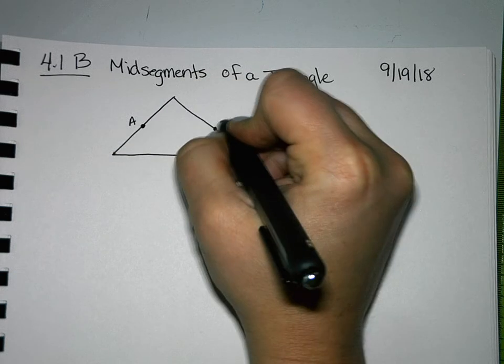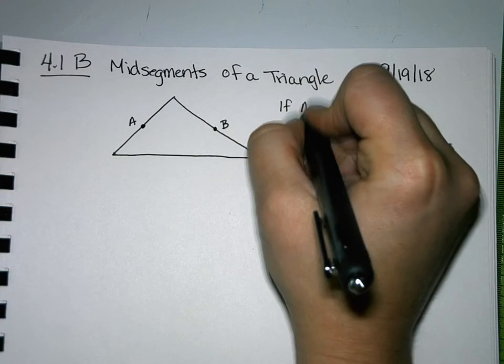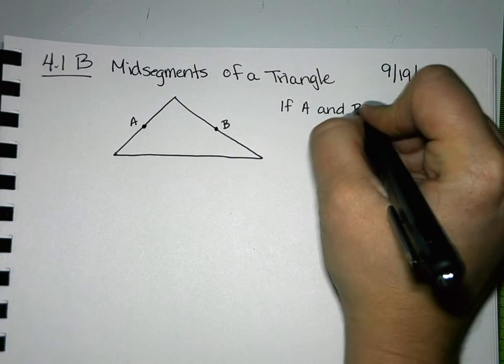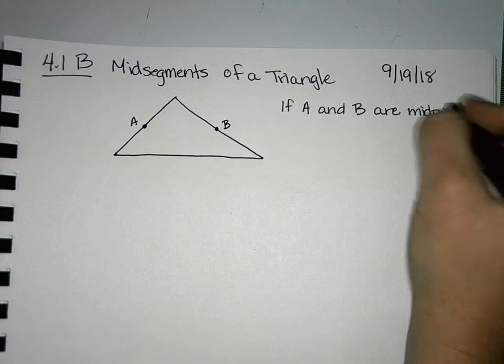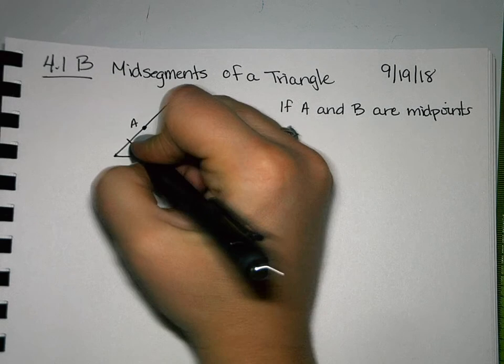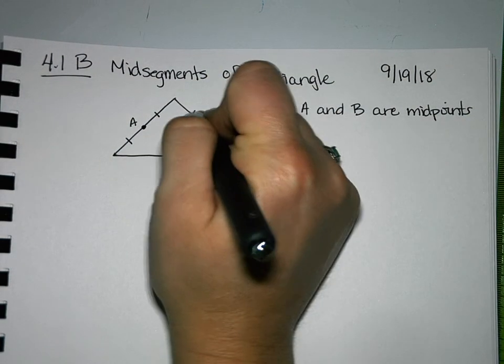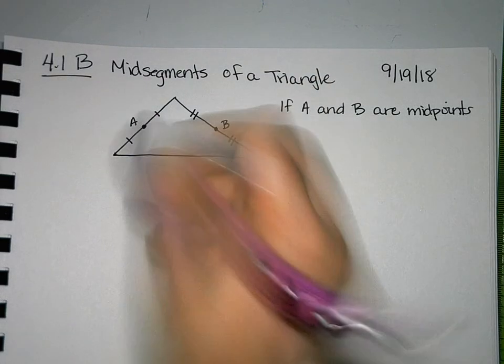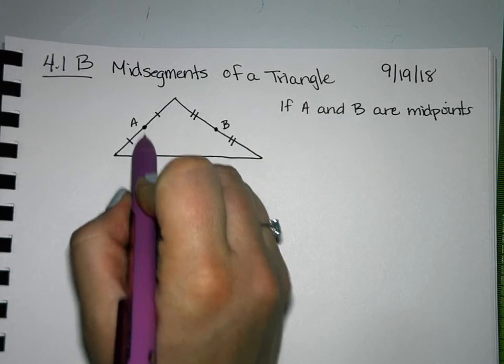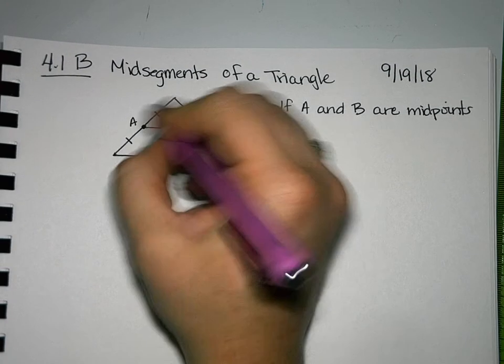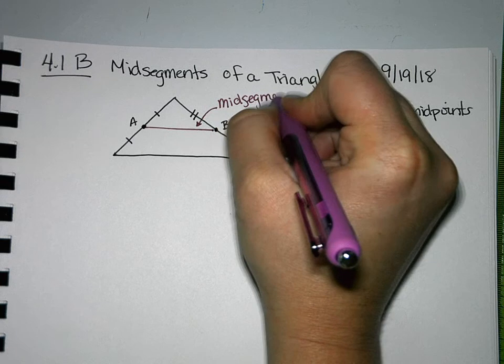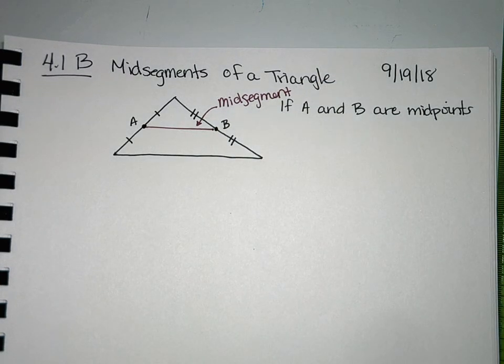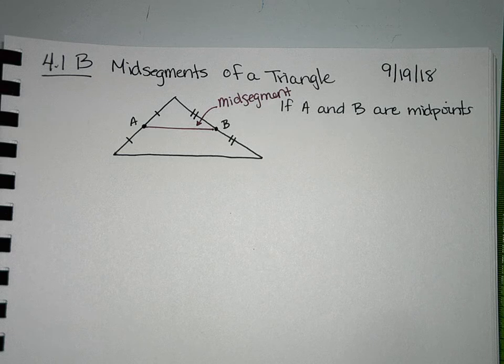So I'm going to call this A and I'm going to call this B. So if A and B are midpoints, that means A cuts that side in half, B cuts this side in half. The line that connects A and B, that line is called a midsegment.